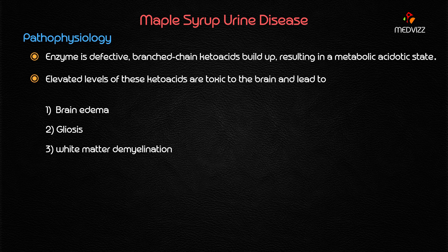This results in a metabolic acidotic state, which is why the case presented with metabolic acidosis. Additionally, there will be elevated levels of keto acids, which are toxic to the brain and lead to brain edema with gliosis and white matter demyelination. These are the three typical features seen in the pathophysiology of maple syrup urine disease.